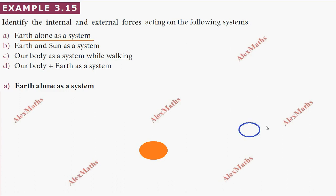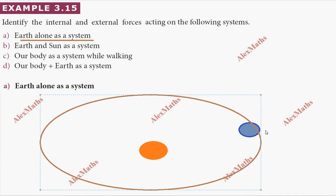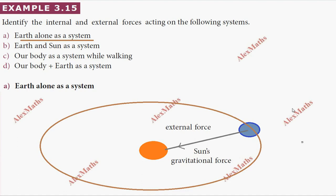So, in the orbit, this is the system. Earth has a gravitational pull. The gravitational force is in this direction — this is the gravitational force, the force exerted by the sun on the earth.